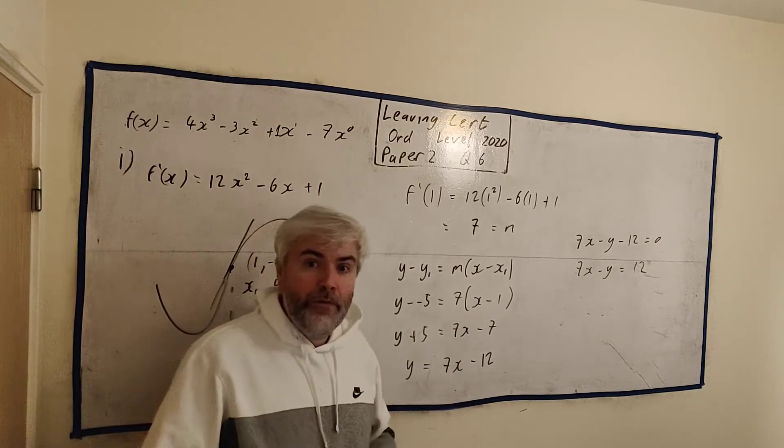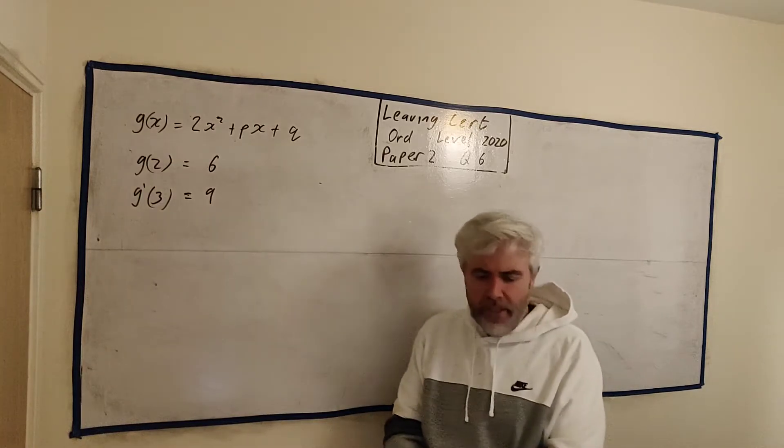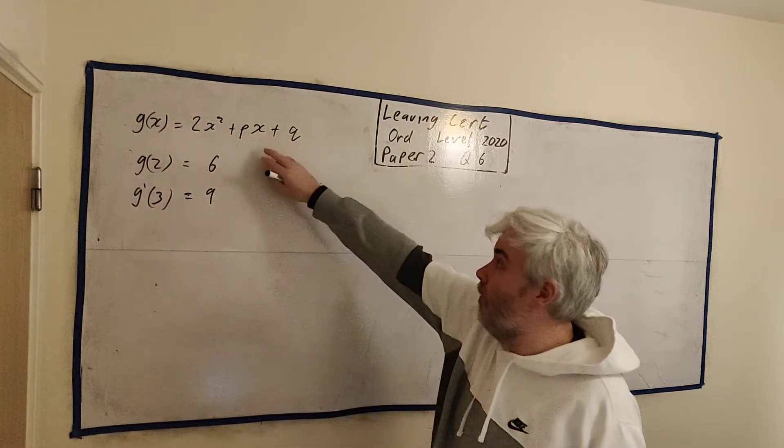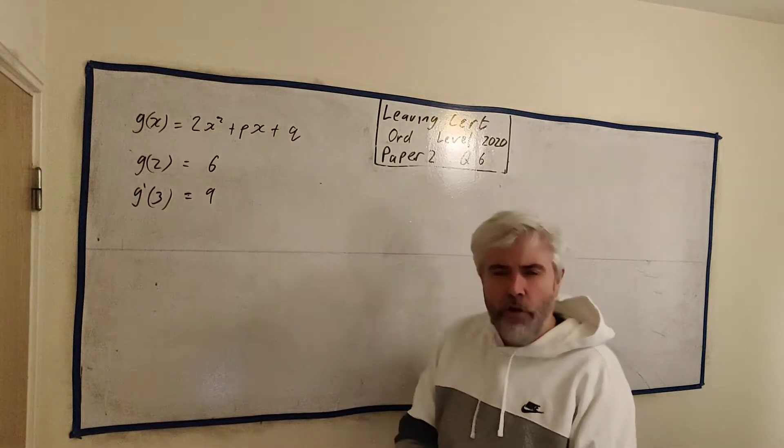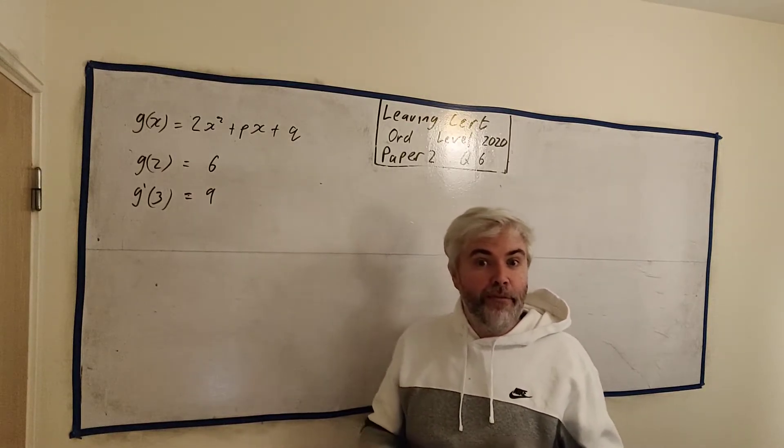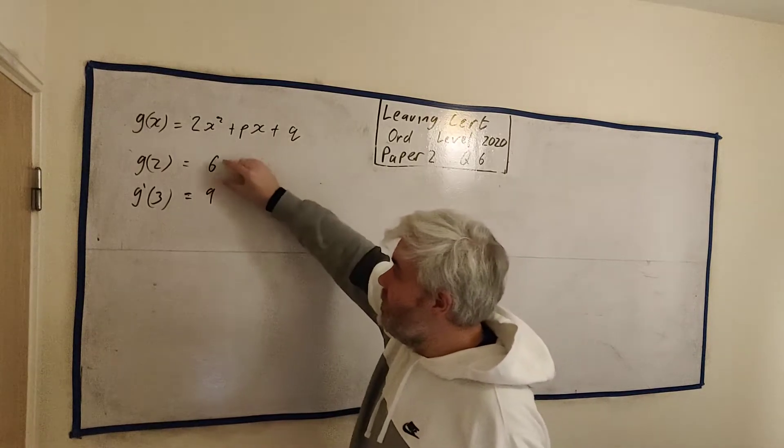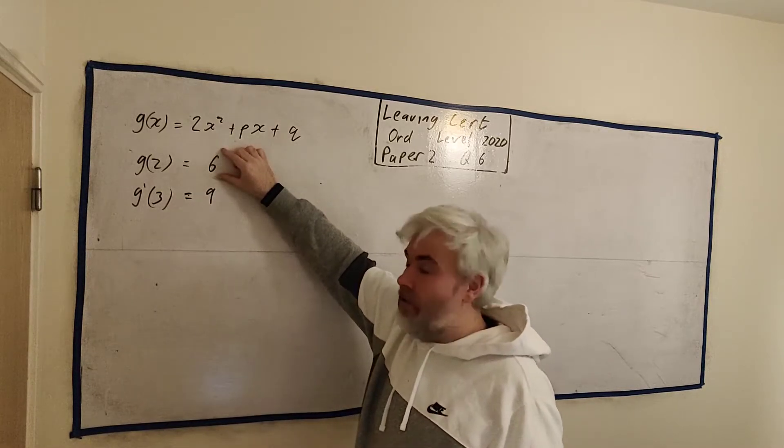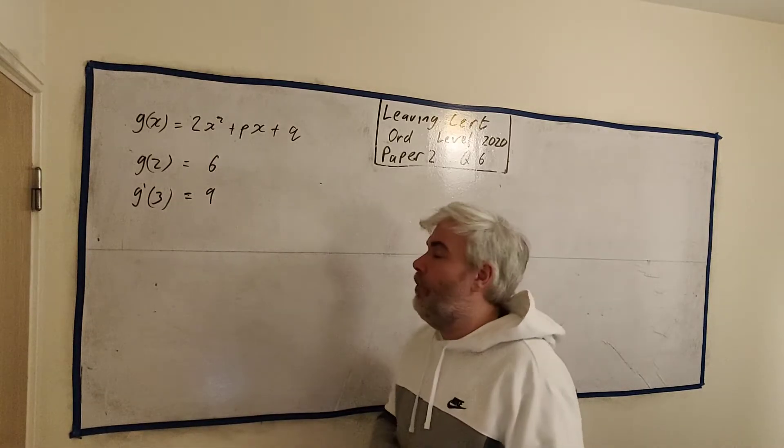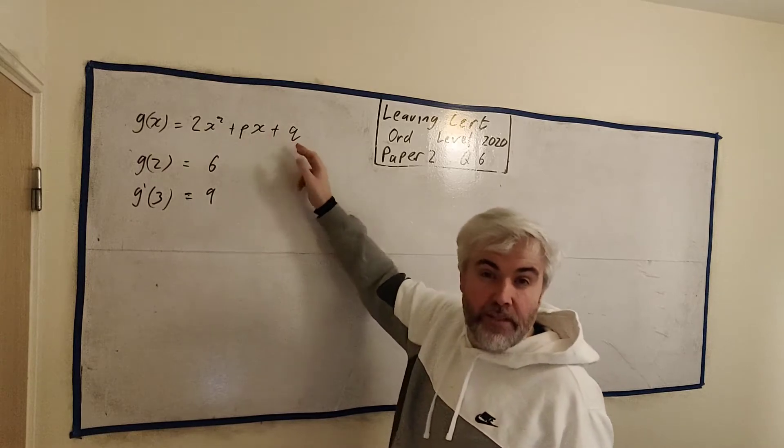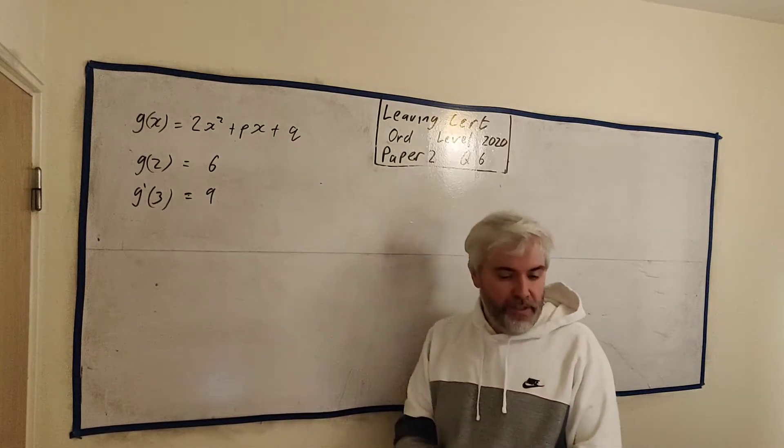Let me rub this out and we'll move on to part B. Part B, they give us a different function, g(x), this time. And we're missing some numbers from it. So whenever you're missing something, you need information to find it. So they gave us two pieces of information. That's good because there were two things missing. So we would need two pieces of information.